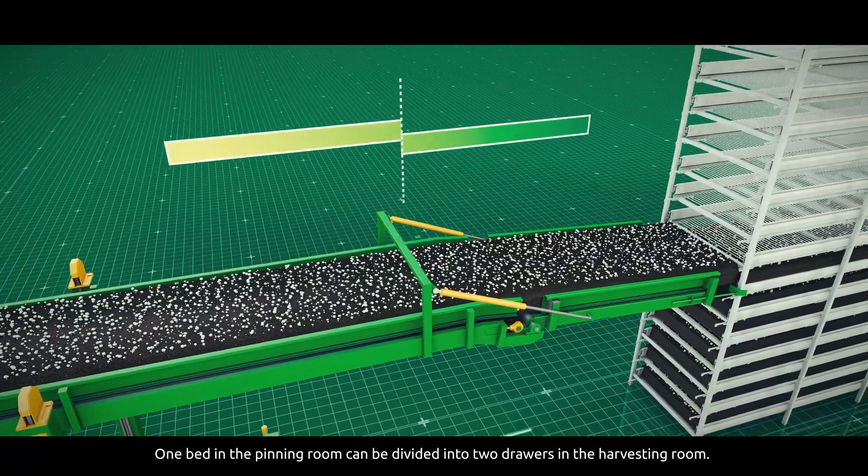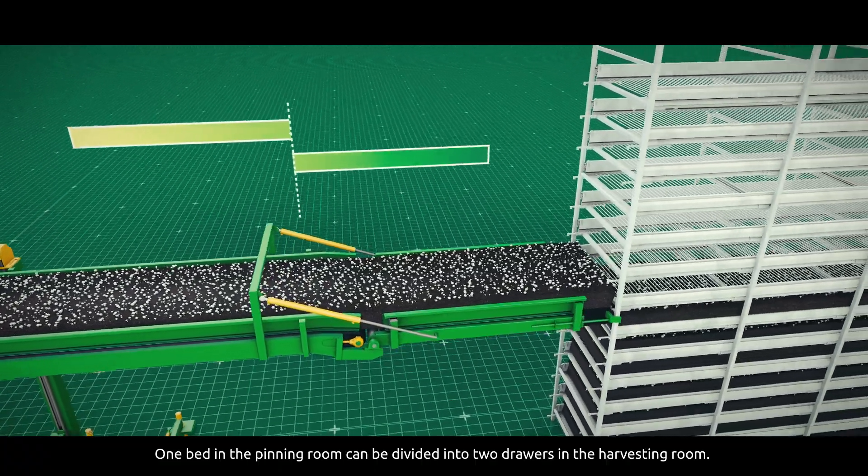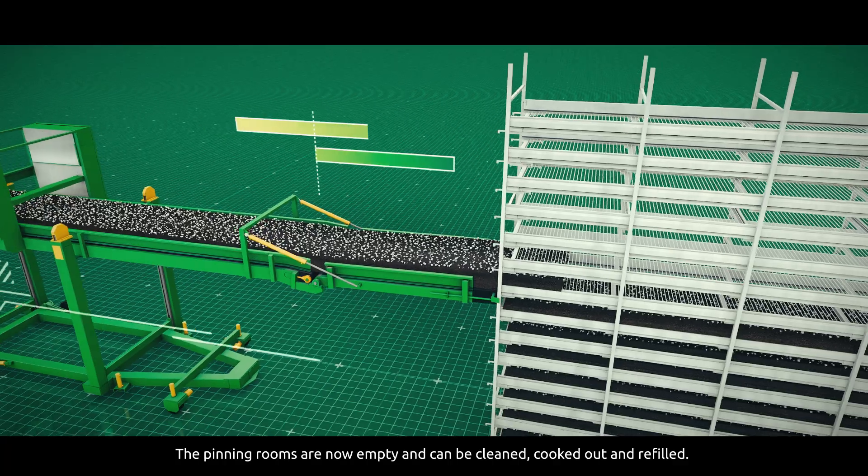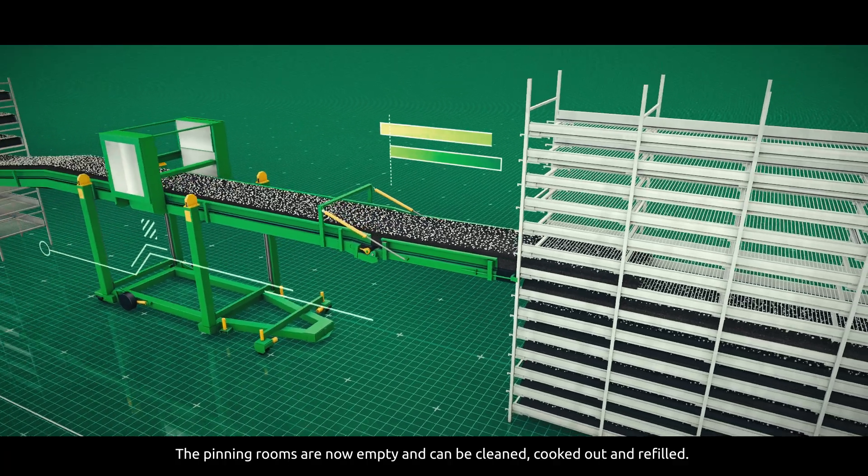One bed in the pinning room can be divided into two drawers in the harvesting room. The pinning rooms are now empty and can be cleaned, cooked out and refilled.